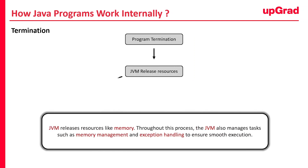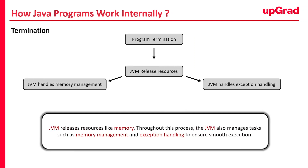Finally, once the main method has finished executing all its statements, the program comes to an end. This is known as termination. The JVM then releases any resources that were allocated during program execution, such as memory. During this entire process, the JVM also handles other important tasks like memory management and exception handling, to ensure that your program runs smoothly without any issues.